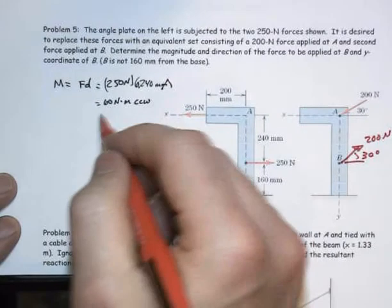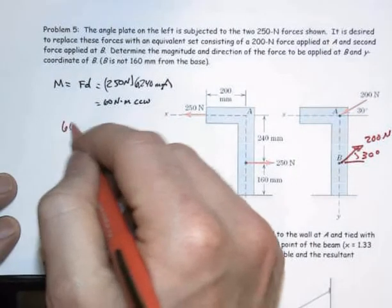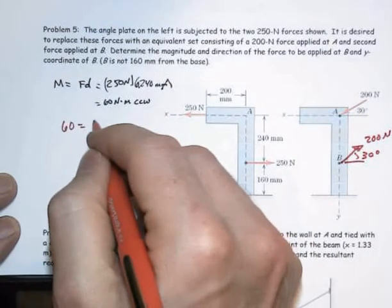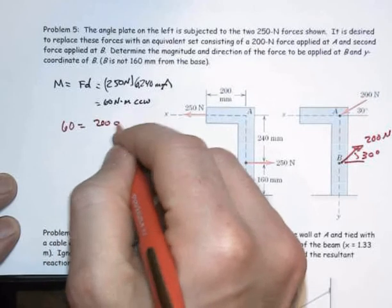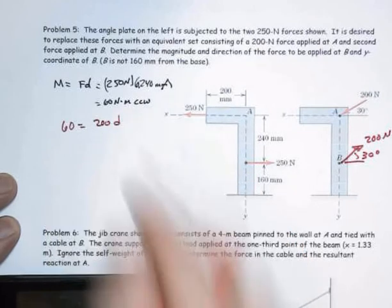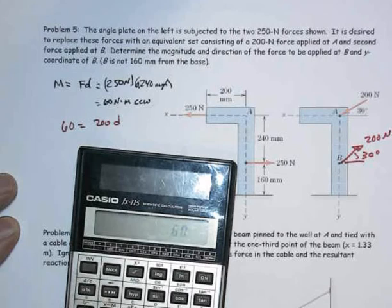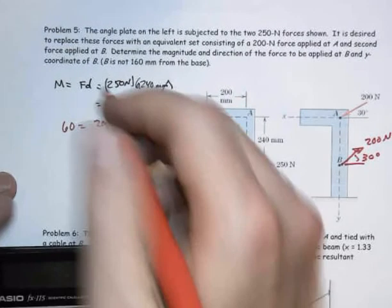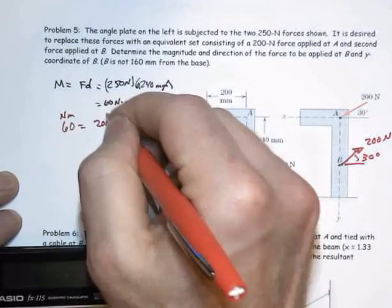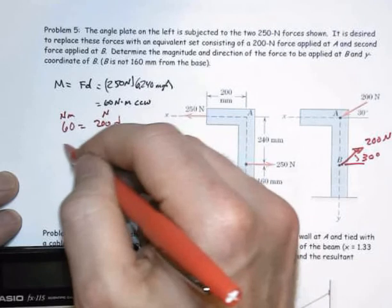And so since I have to have the same moment, then 60 is going to be equal to the force of 200 times some unknown perpendicular distance. So that'll be 60 divided by 200, and keep track of the units. We got Newton meters there, Newtons there.